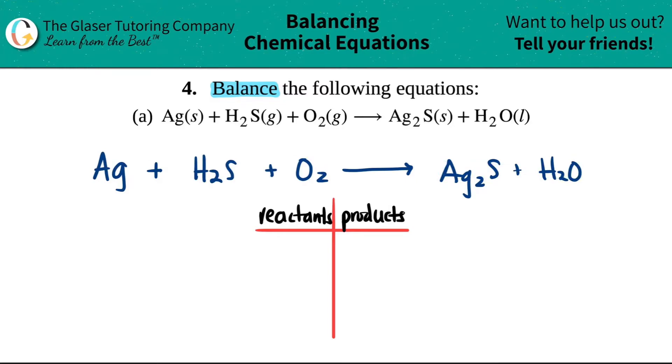But when you're doing this chart, always list your individual elements down here. So I just like to work from left to right and I'm just going to label all of my individual elements. If I look on this side, I have silver, which is Ag, I have a hydrogen H, a sulfur, and an oxygen. So I'm just going to write that. I have Ag, H, S, and O.